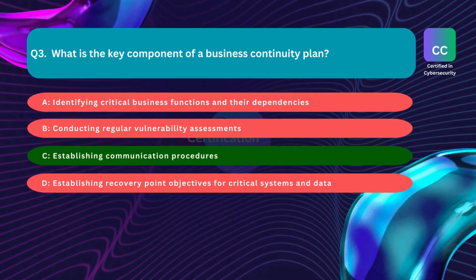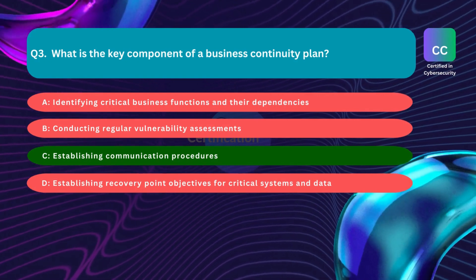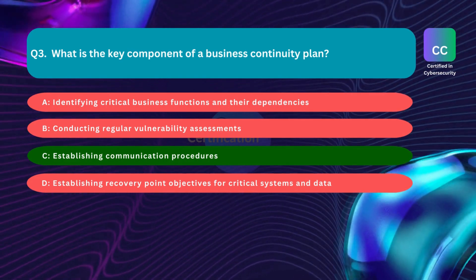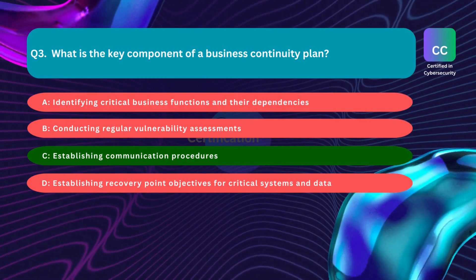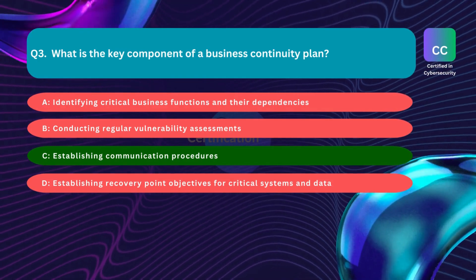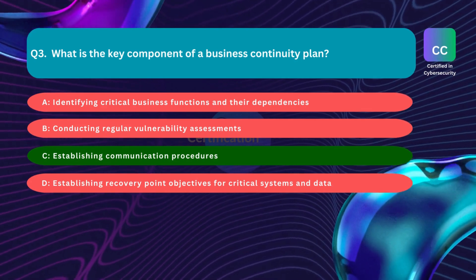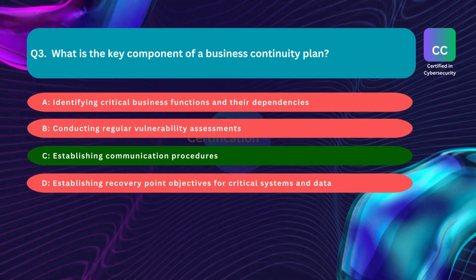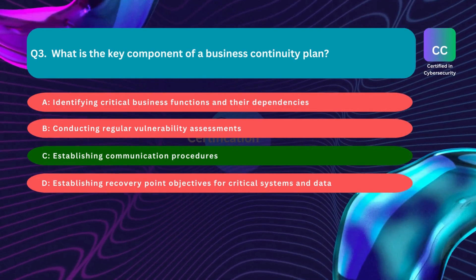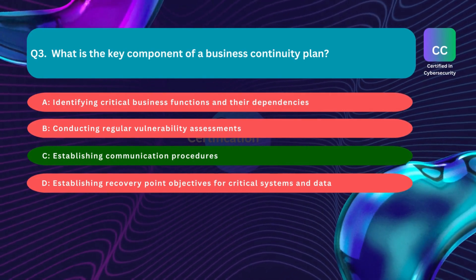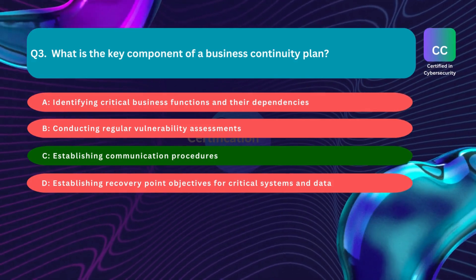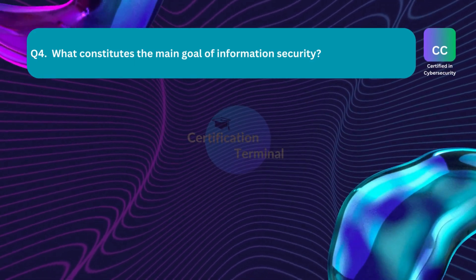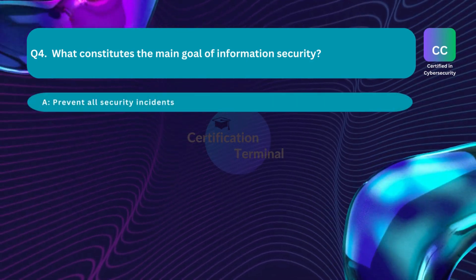The correct answer is Option C — establishing communication procedures. A business continuity plan (BCP) is a system of prevention and recovery from potential threats to a company. The plan ensures that personnel and assets are protected and able to function quickly in the event of a disaster. The five key components are: risks and potential business impact, planning an effective response, roles and responsibilities, establishing communication procedures, and testing and training. Of these, establishing communication procedures is most important.